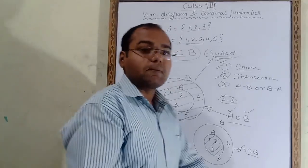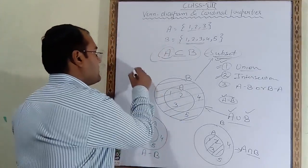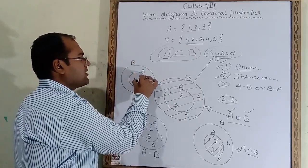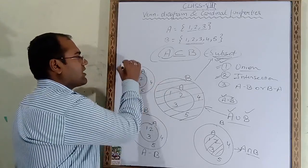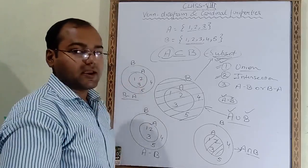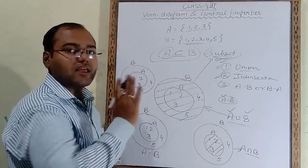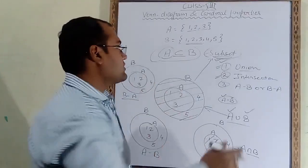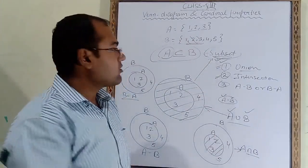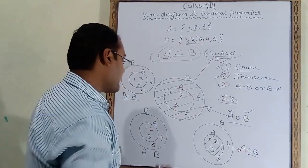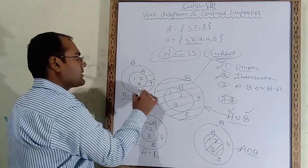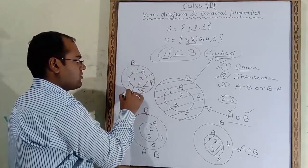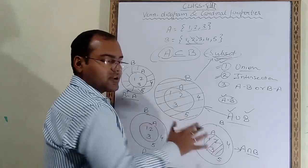Next is B minus A. We draw the subset figure again: B is the outer circle with elements 1, 2, 3, 4, 5 and A is the inner circle with 1, 2, 3. B minus A means from B we remove A's elements — 1, 2, 3. What remains is 4 and 5, which are in the outer ring. So we shade this outer ring part for B minus A. These are all the cases of the subset diagram.